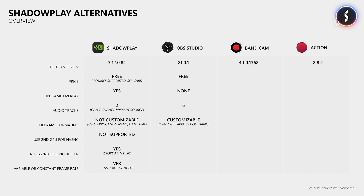A really cool feature of OBS is that you can use a second graphics card for the video encoding, which I'll tell you more about in a minute. It also comes with a replay buffer, however it stores the video in your RAM, which means you need at least 16GB, as the replay buffer needs about 2GB for 8 minutes of gameplay when recording at 1080p with 60fps and a quality setting of 20 for NVENC. OBS only records with CFR, or constant frame rate, which is a bit more demanding and results in larger files, but also has its benefits.